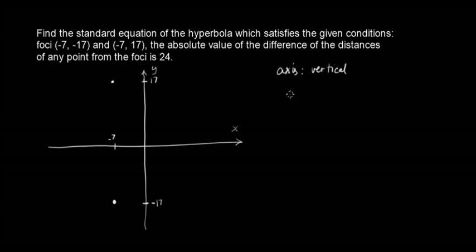This means ang equation natin is y² over a²... Actually, hindi pala natin alam kung nasaan ang gitna. If the foci is at (-7, -17) and (-7, 17), ano yung nasa gitna nila? The midpoint of these two points is at (-7, 0). This is your h and k.